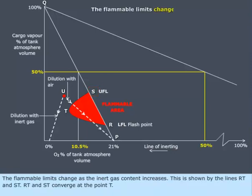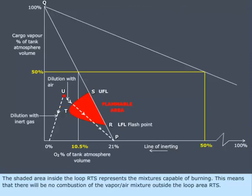The flammable limits change as the inert gas content increases. This is shown by the lines RT and ST. RT and ST converge at the point T.